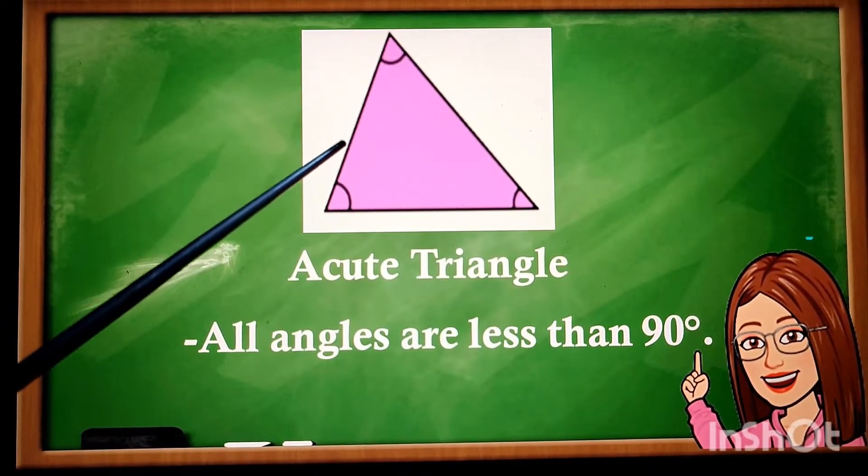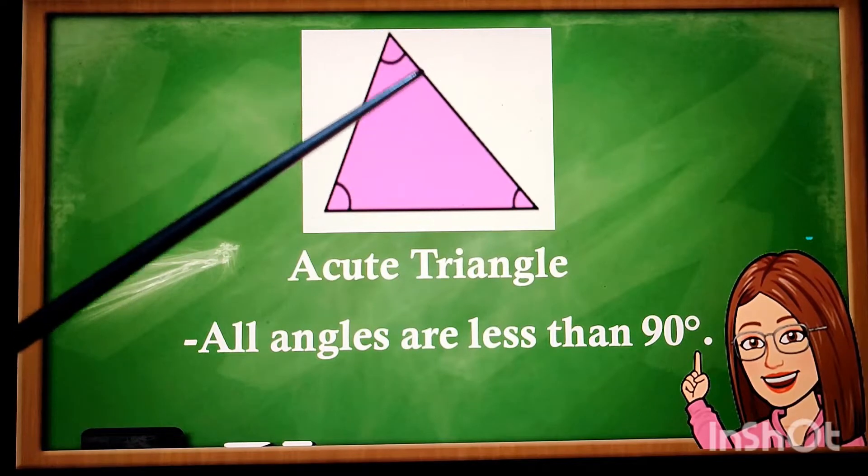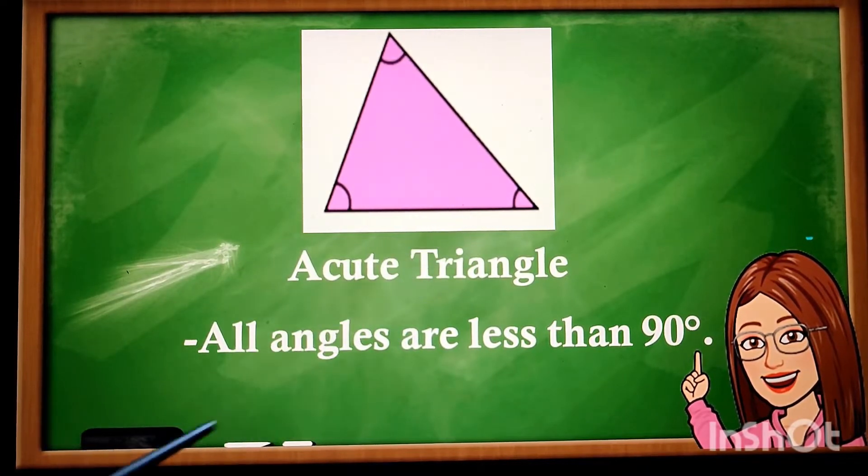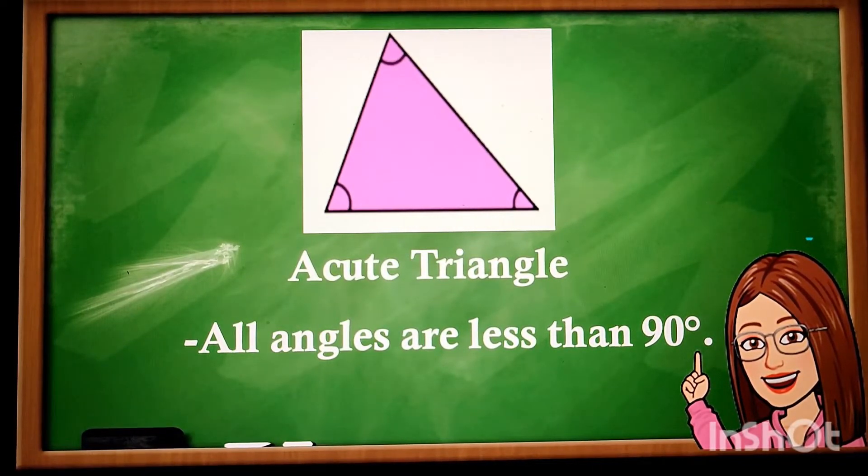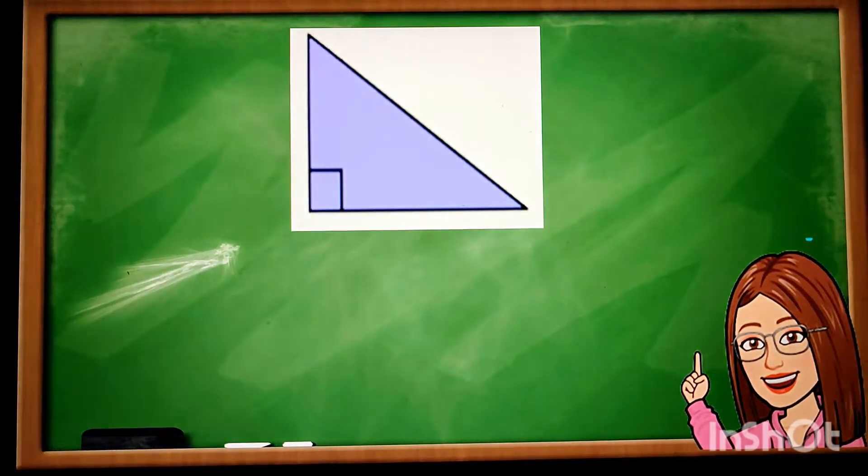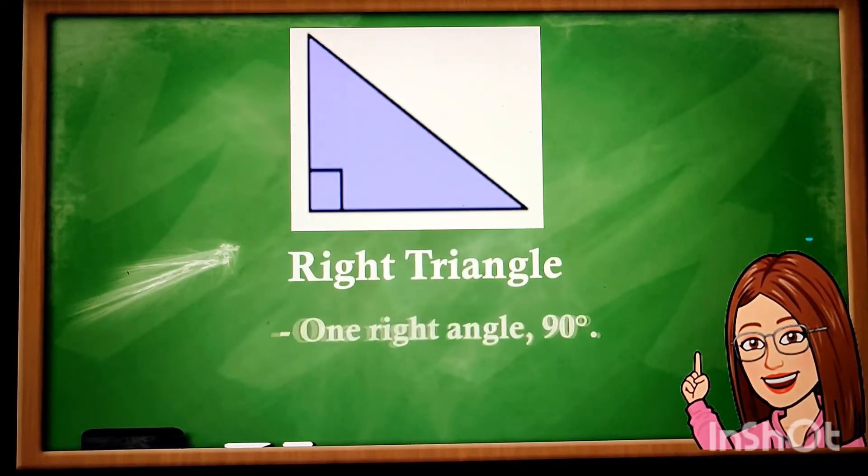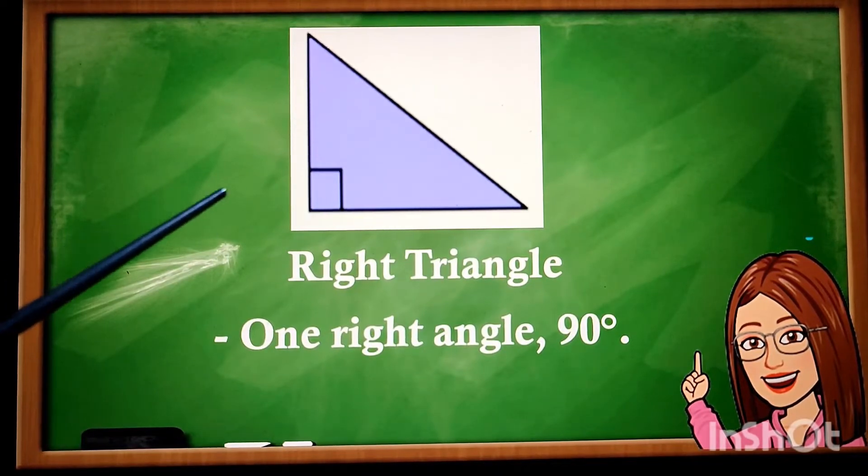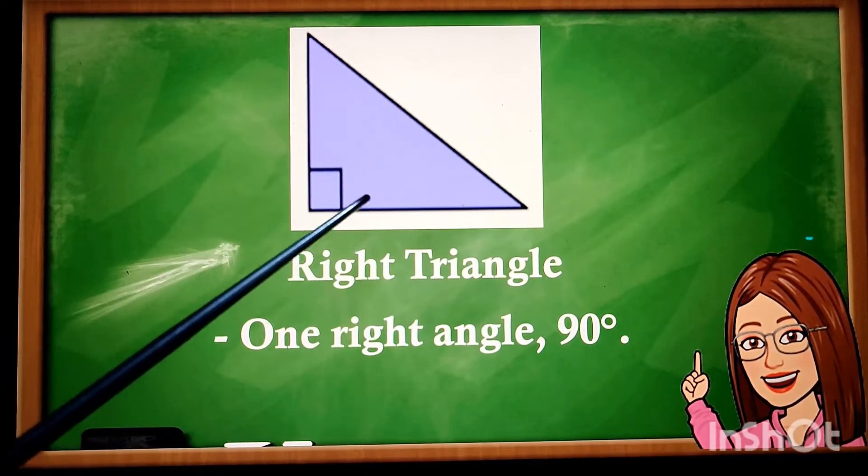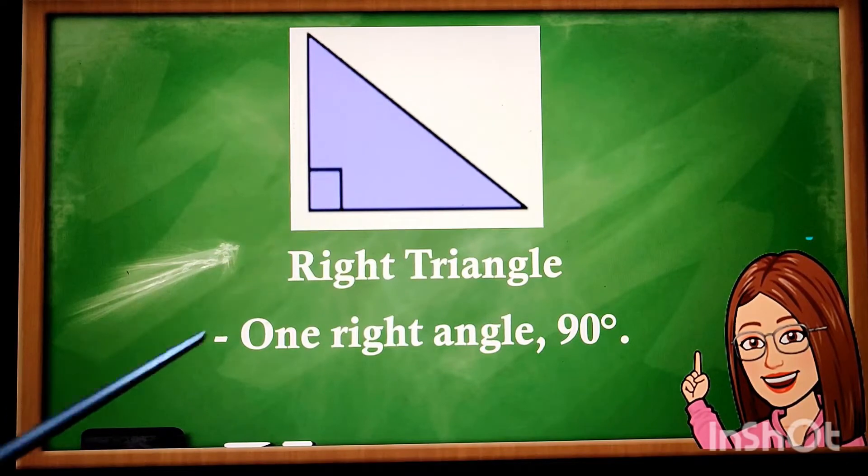Angle A, B, and C, it measures less than 90 degrees. Next we have right triangle. One right angle, this one, it forms exactly 90 degrees.